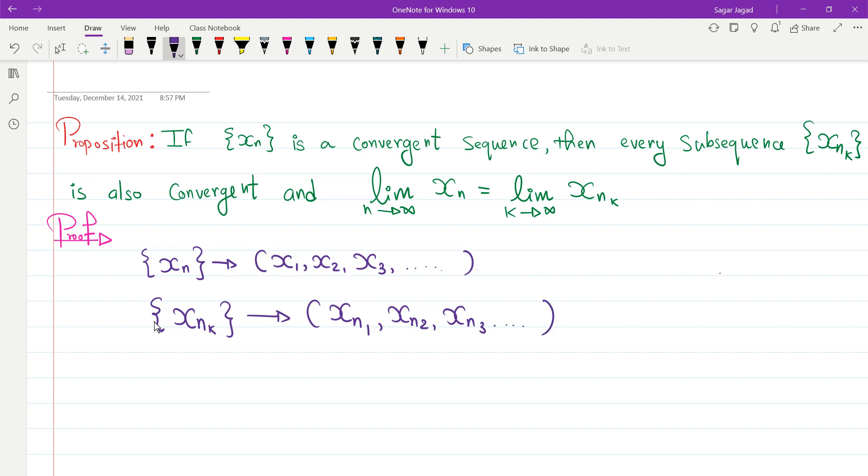From a sequence, how we create a subsequence: what we do is randomly we choose an element from a sequence. For example, suppose I choose x2, this becomes my first place. Now for the second place, I choose any element which is after this x2. For example, suppose if I choose x10, this could be my second element. The third element could be somewhere else on this list.